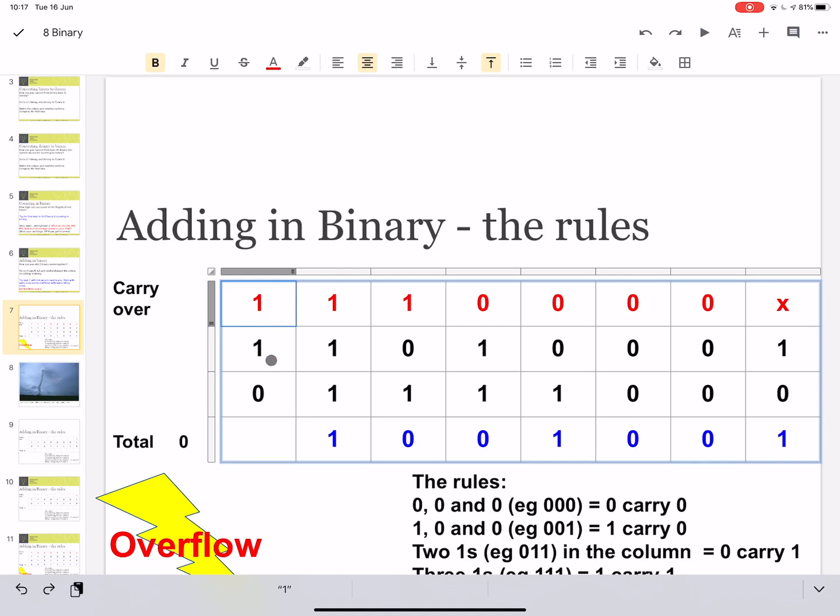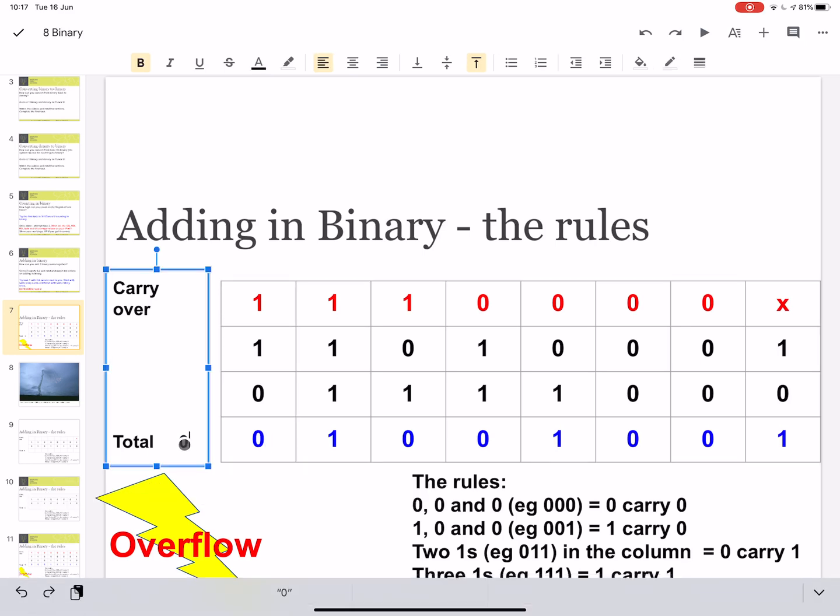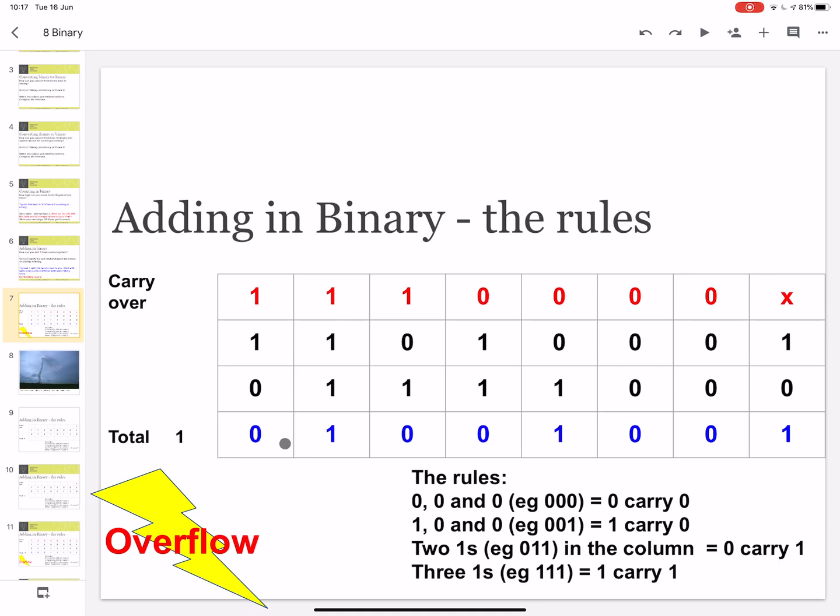So now we've got 2 1s and a 0. So here, 2 1s and a 0 is 0 in the total, carry 1. Look, we're out of columns. So if this happens, what you do is you create a 9th bit. See here, I've got 8 bits. I've made a new 9th bit with the carryover, which was 1. And if this happens, we call this overflow. Sometimes it's called an overflow error.